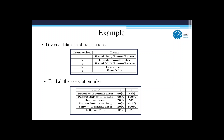Support for beer implies bread is 1 out of 5, or 20%. Of the transactions containing beer — which is 2 out of 5 — 50% are associated with the rule beer implies bread. For jelly implies peanut butter: jelly is in only one transaction, so support is 1 out of 5 or 20%. But since peanut butter is also present in that same transaction T1, the confidence is 100%.